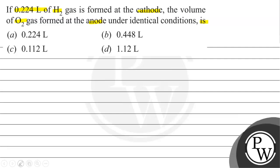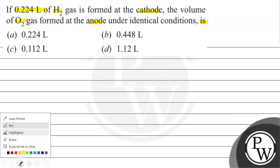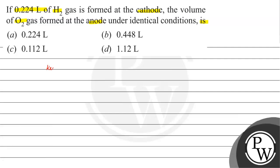There are four options given, but let us see what is the key concept. In this question, there is electrolysis of water, and its equation is: H2O gives H2 plus half O2.